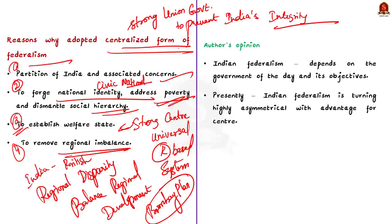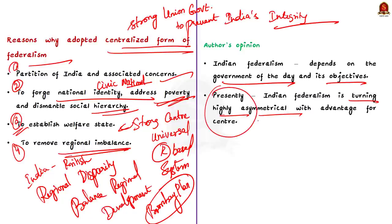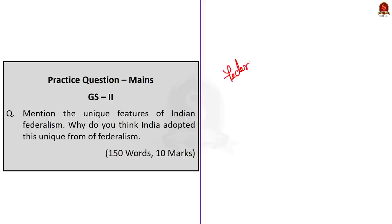The author concludes that the current form of federalism in the Indian context is largely a function of the intent of the government of the day and the objectives it seeks to achieve. It was because of the right intention that linguistic reorganization was possible. But presently, the central government is turning the unique Indian federalism into a highly asymmetrical one, which the author considers a bad precedent. That concludes this news article on Indian federalism.